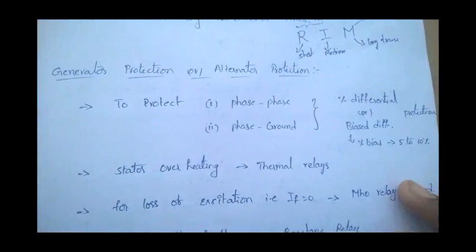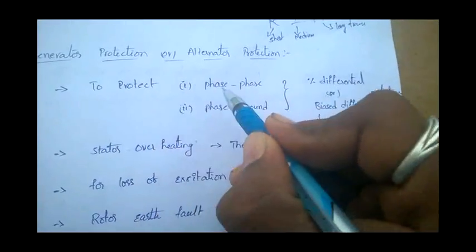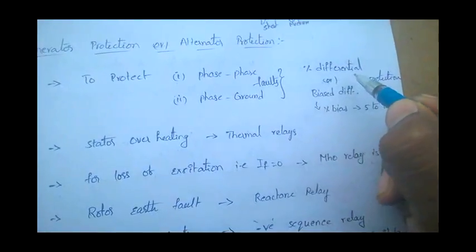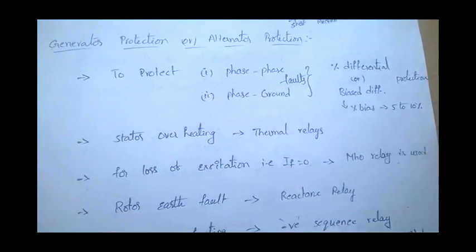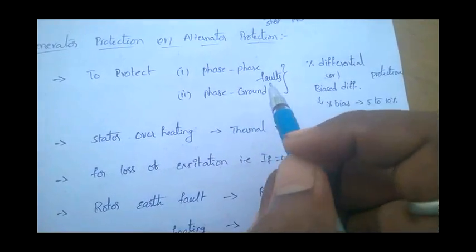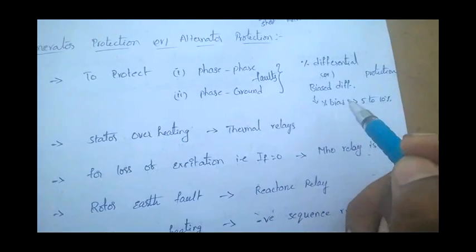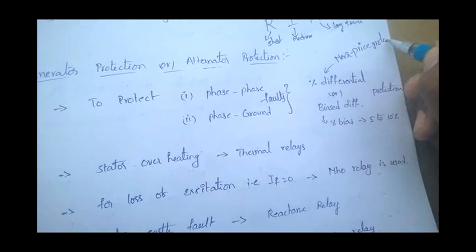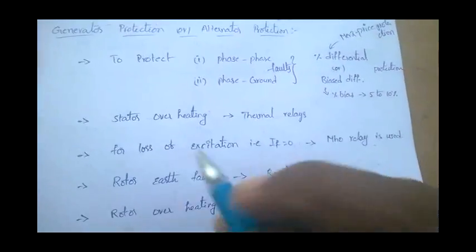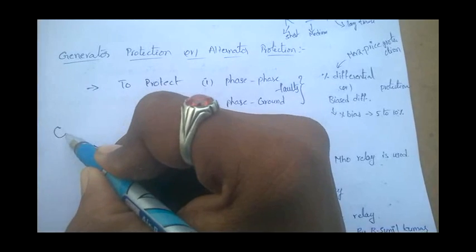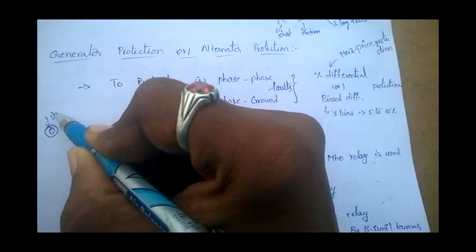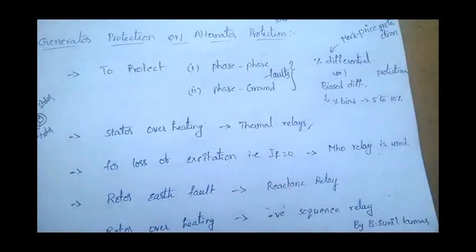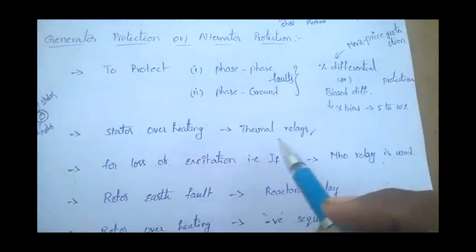Next topic: generator or alternator protection. To protect against phase-to-phase and phase-to-ground faults, percentage differential (biased differential) protection is used. This is also called Merz-Price protection. In case of stator overheating, thermal relays are used.